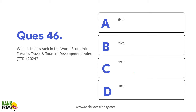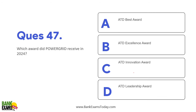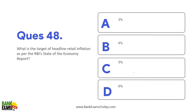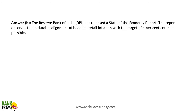What is the rank of India in the World Economic Forum's Travel and Tourism Development Index? It is 39th. Which award did Power Grid receive in 2024? It is the ATT Best Award 2024 — very important. What is the target of headline inflation as per the RBI? According to the recent RBI State of Economy report, the headline inflation target is 4%.